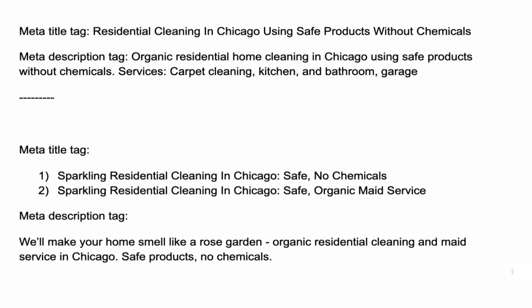I want to show you my answer to the exercise from the previous video, which was to make the meta tag more attractive. The original title meta tag was 'residential cleaning in Chicago using safe products without chemicals.' I added the word 'sparkling' because it stands out and sounds nicer — like 'I want my house to sparkle.' It's not the best addition, but it's my version: 'Sparkling residential cleaning in Chicago: safe, no chemicals.' I shortened the original phrase to fit in 'sparkling.'